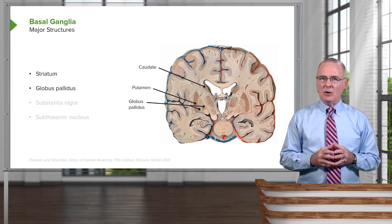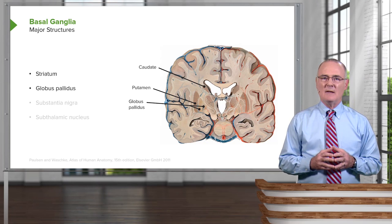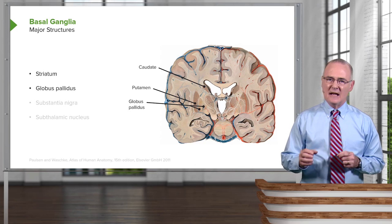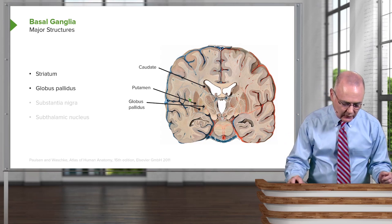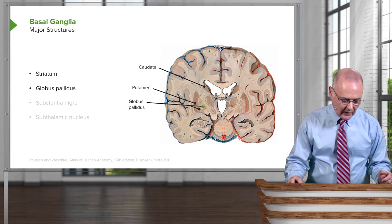Another member of the basal ganglia is the globus pallidus. It has two segments: an internal segment shown here, as well as an external segment shown here.